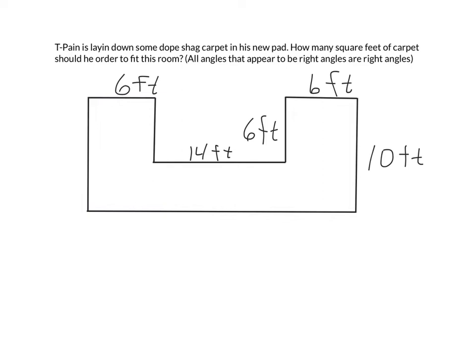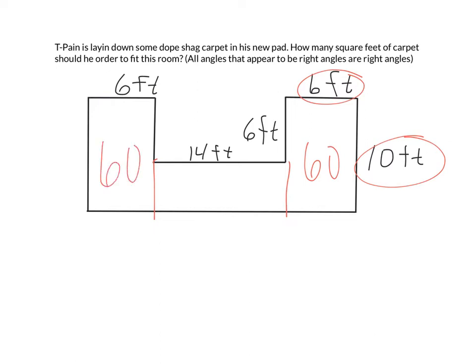We've got this weird U-shape going on here. I think he needs to change his layout, but we're dealing with what we've got. We can actually break this up in a few different ways, and some of you might see things differently. The way I see this particular one is: if I drop this side down and this side down, I've got a 6×10, so 60. And over here I'm going to have a 60 as well. This would also be 6 feet here, and then this side would also be 10.